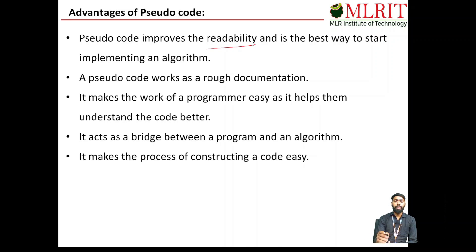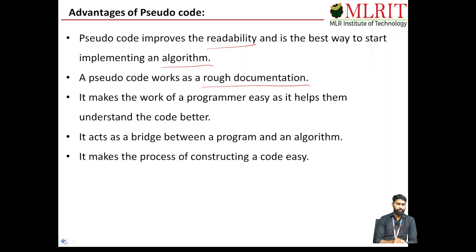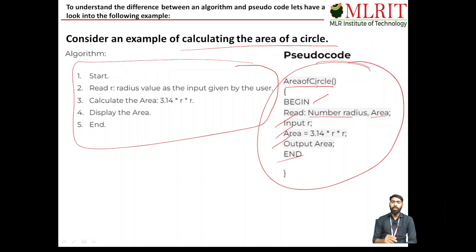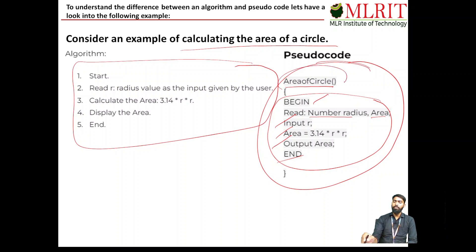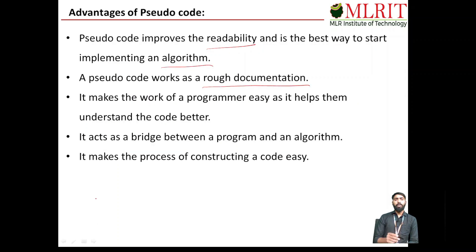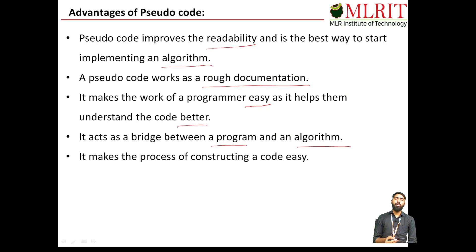Advantages of pseudo code: pseudo code can improve readability and is the best way to start implementing an algorithm. Based on the algorithm we write the pseudo code, and based on the pseudo code we write the program. Pseudo code works as rough documentation — for example, by seeing the function name AreaOfCircle, we know the functionality of the function. It makes the work of a programmer easy by helping them understand the code better. It acts as a bridge between a program and an algorithm, making the process of constructing code easy.